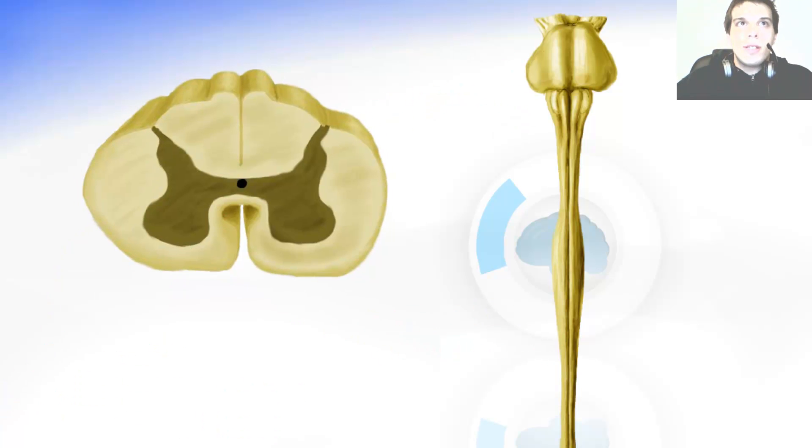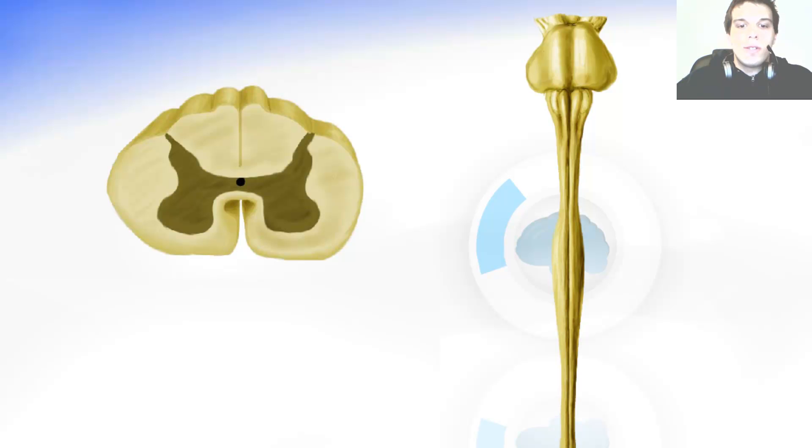Now the thoracic segments look more like this. They are smaller. The gray matter will also have one more horn and it is the lateral horn. It is going to look like this. So this over here is the difference, the lateral horn.